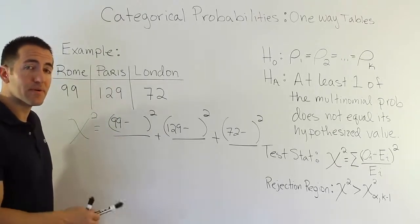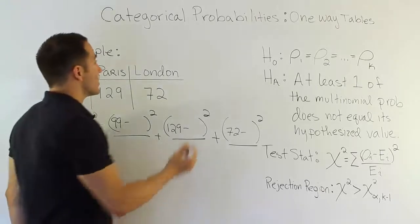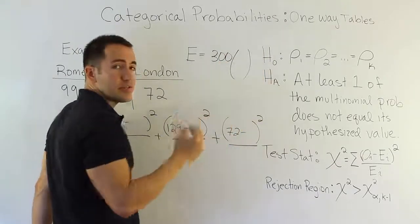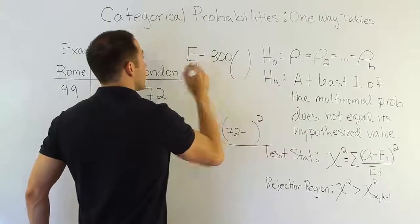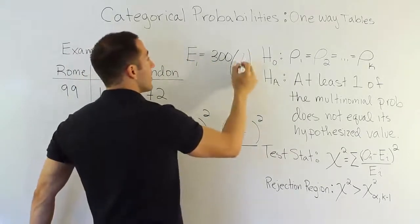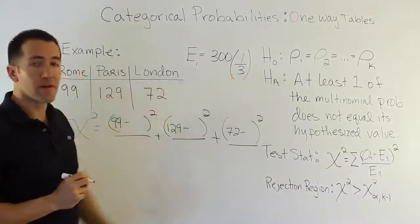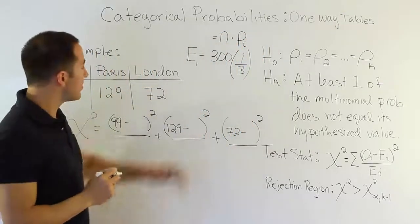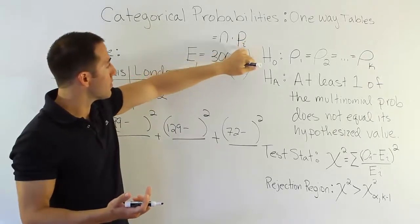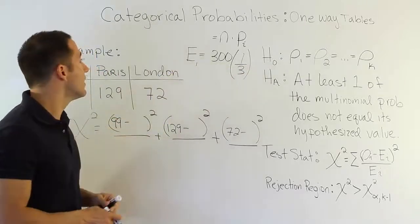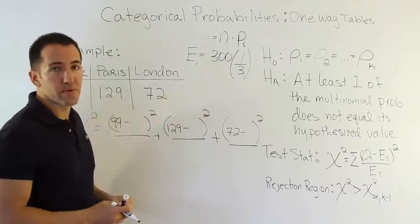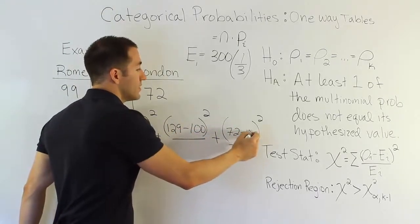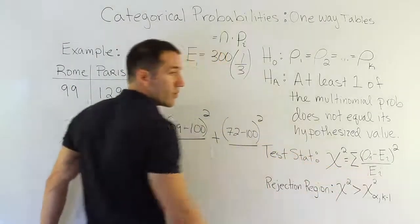There were 300 people in the study, so the expected value is N times the probability for each category. Since each probability is one-third, the expected value for each city is 300 × (1/3) = 100. So we expected 100 people to say they wanted to go to each of these cities. The expected value E_i appears in both the numerator and denominator of each fraction.